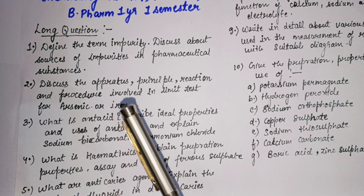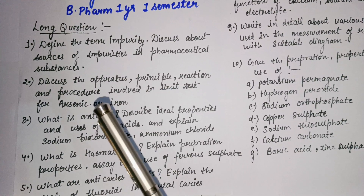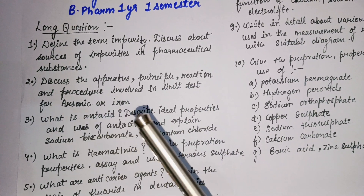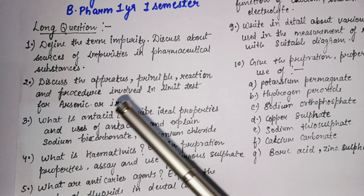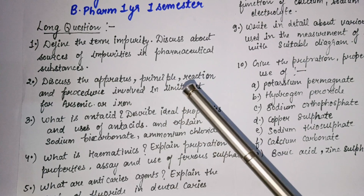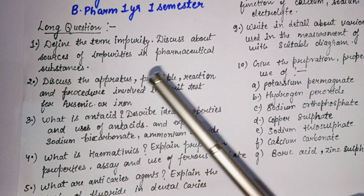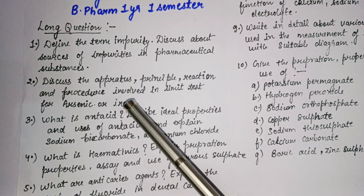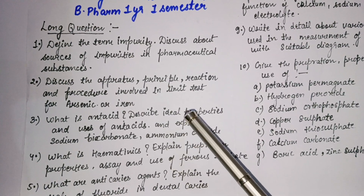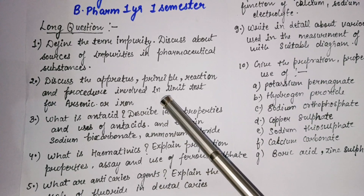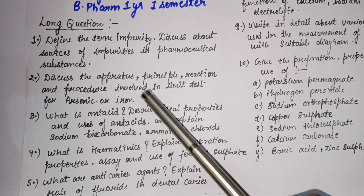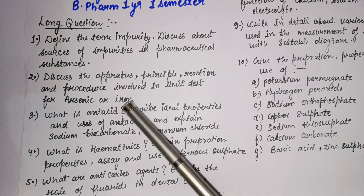The second question: discuss the apparatus, principle, reaction, and procedure involved in the limit test for arsenic and iron. So for the second question, we need to cover arsenic and iron — apparatus, principle, reaction, and procedure. All these things are written in the limit test for the standard. We need to write the same reaction and also write the principle in the same way. Both arsenic and iron are involved in this question.